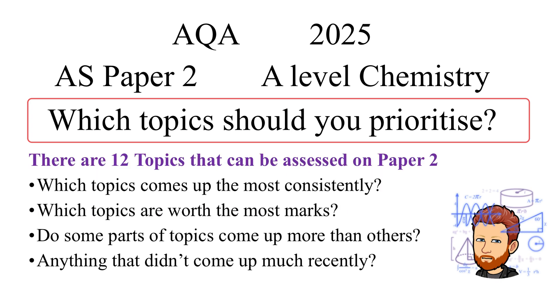There are 12 topics that can be assessed on AS Paper 2 and I'll be taking a look at which topics come up the most consistently and are worth the most marks. We'll explore whether there are some parts of topics that come up more often than others and carry the most marks and I'll also look at whether there are some topics that weren't assessed much on the most recent papers.